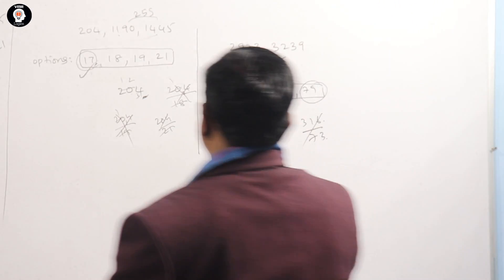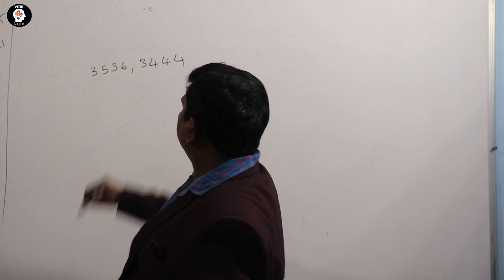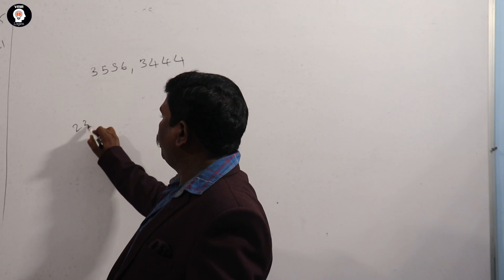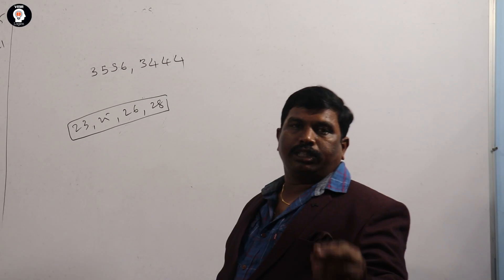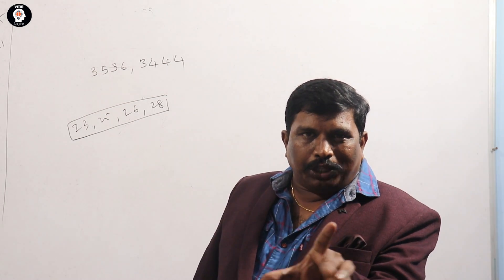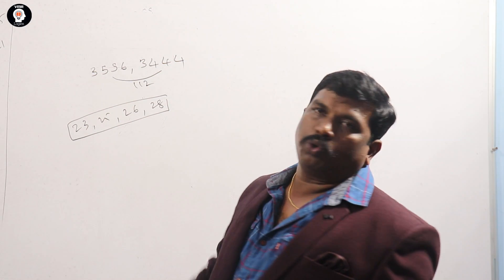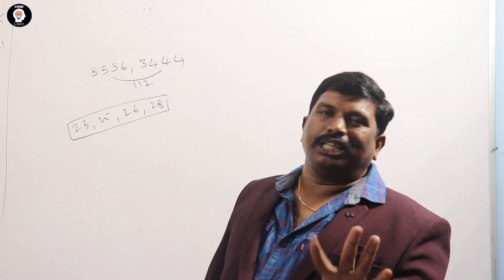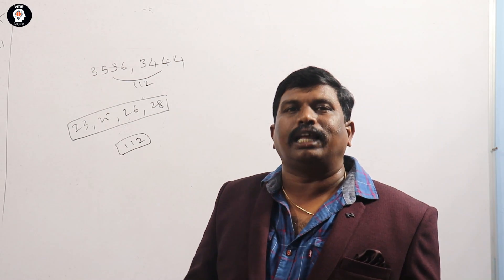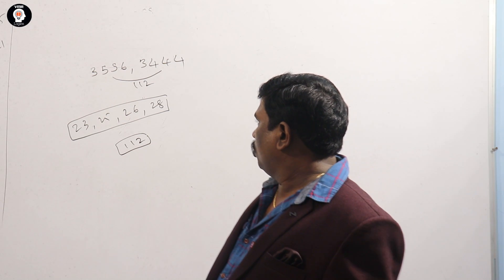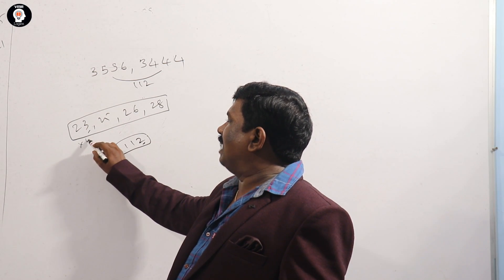Last example: 35563, 3444. Find the GCD. Options are 23, 25, 26, 28. Minimum difference to check: the difference is 112. Minimum difference option: 1, 2, 25 — investment and three, four, five, five, six — five percent.